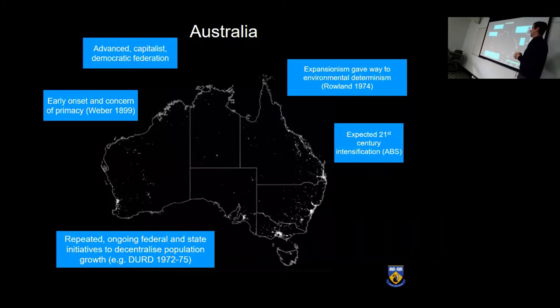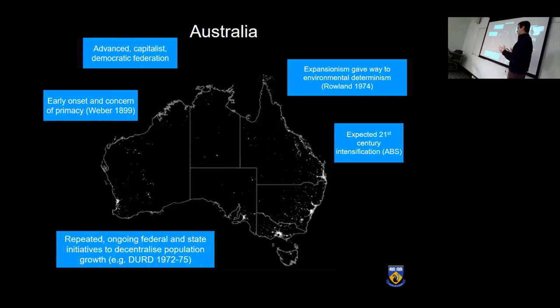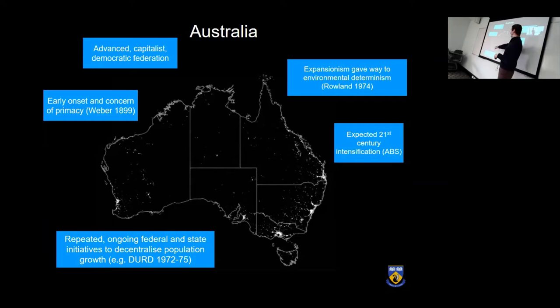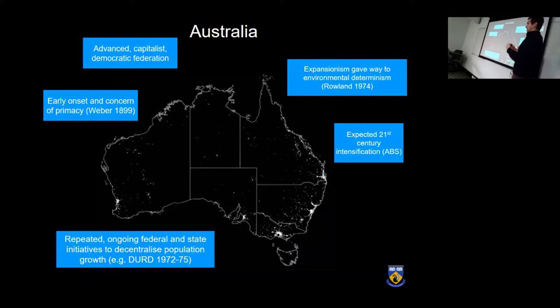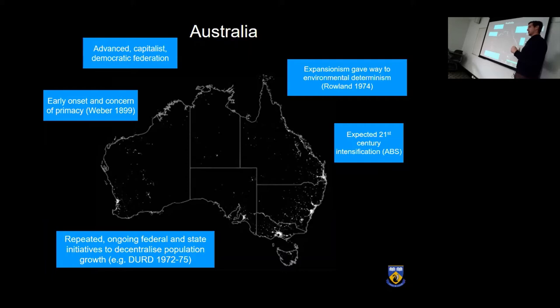What does this have to do with Australia? Australia is not a poor country — it's an advanced, capitalist, democratic federation — so it would not be a likely candidate for urban primacy. However, at the state level, and formerly the colonial level, Australia had very early onset and persistent urban primacy. Each state has an extreme measure of urban primacy. After primacy was first recognized, early concern gradually gave way to resignation and environmental determinism — the idea that Australia's harsh environment could only support one city. The ABS projects that primacy will increase this century, with capitals growing their share of population.